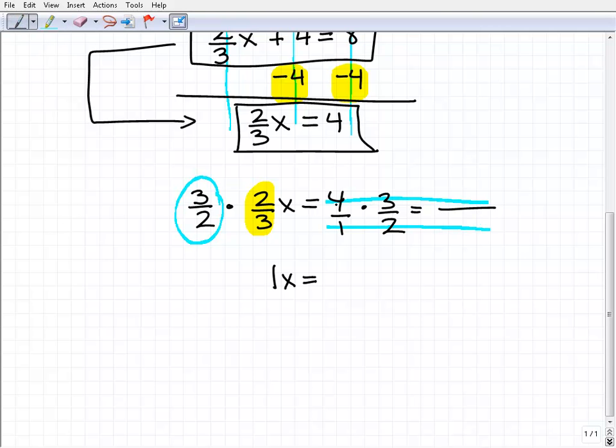Remember, when you're multiplying fractions, you always multiply the numerators, and then you multiply the denominators across. So this would be 4 times 3, that's 12. 1 times 2 is 2, so that is going to be equal to 6. So our solution is x = 6 or 1x = 6, that are equivalent.